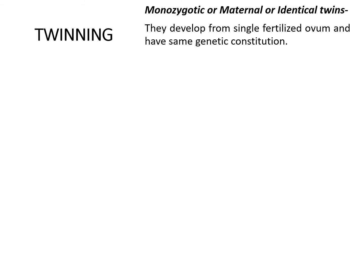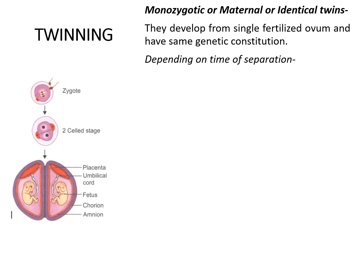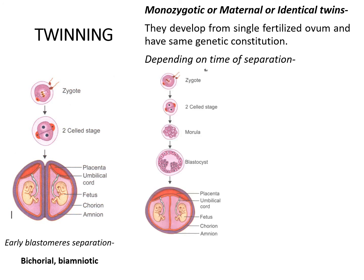Monozygotic twins are produced by fertilization of a single ovum by a single sperm, producing a single zygote. They are phenotypically and genotypically similar, hence called identical twins. Monozygotic twins are classified depending on the time of separation. If separation occurs up to the third day after fertilization (during the phase of early blastomere), they have two different chorionic cavities, two different placentas, and two different amniotic sacs — bichorial and biamniotic. If separation takes place between the fourth to seventh day by duplication of the inner cell mass, they have a common placenta and common chorionic cavity but may have two different amniotic sacs — monochorial and biamniotic.